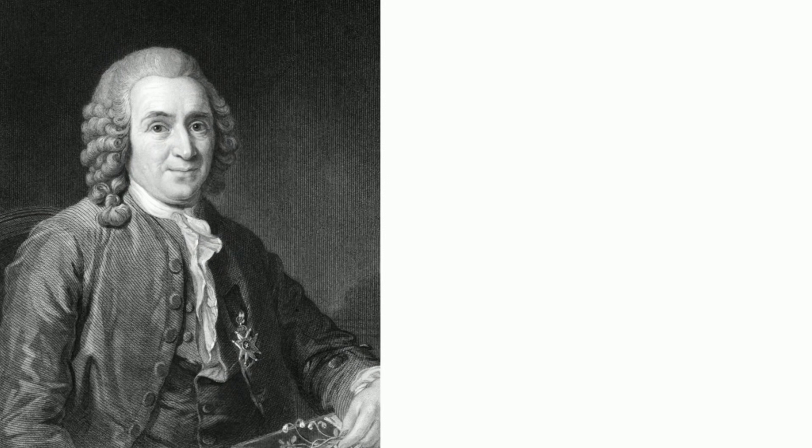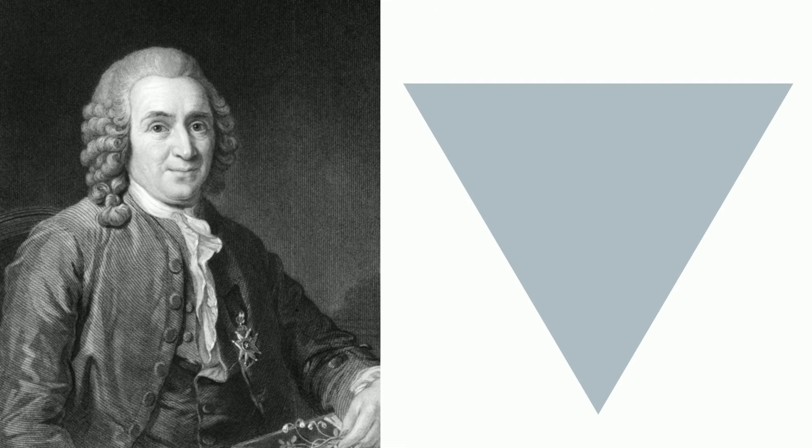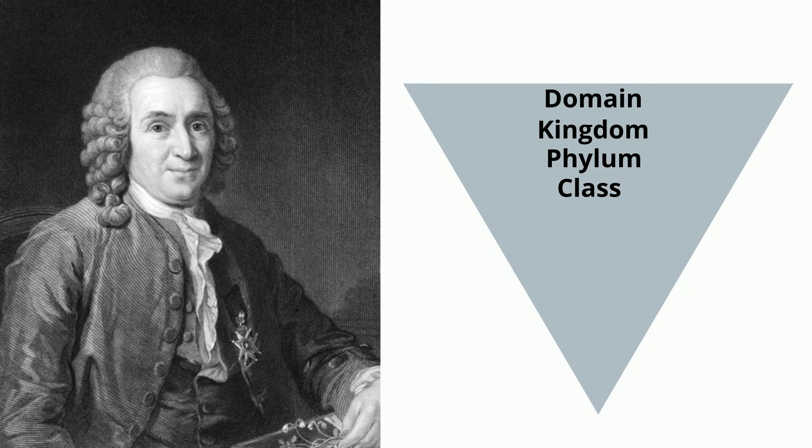How do you create names for organisms that can be used anywhere in the world? This is where taxonomic classification, also called the Linnaean system, comes into play. Named after its inventor Carl Linnaeus, a Swedish botanist, zoologist, and physician, the Linnaean classification system has eight levels of classification. You may also hear this called taxonomic rank.